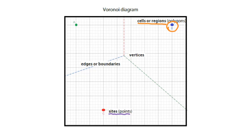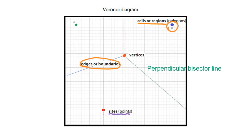The lines that separate two sites we call edges or boundaries. And the intersection of edges we call vertices. Each edge is a perpendicular bisector line between two sites.